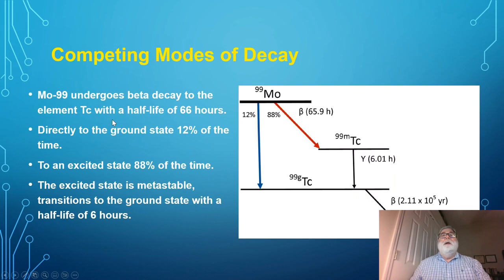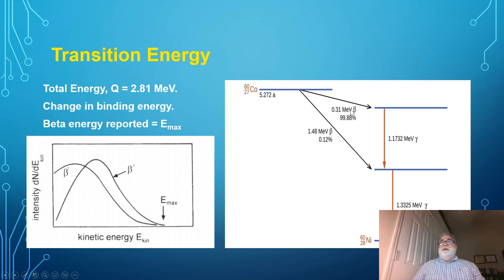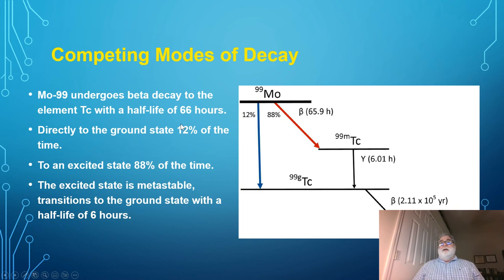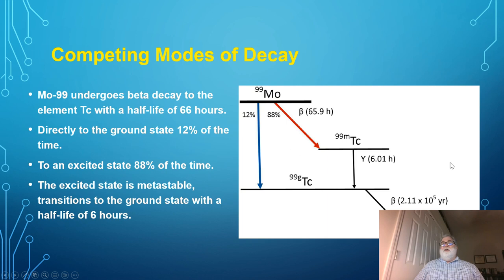There are competing decay modes — here we had two different possible betas that could be emitted. Here's another example: molybdenum-99 undergoing beta decay to technetium, with an intermediate energy level in technetium — technetium-99m, which is metastable. The nucleus can stay in this state for some short period of time. About 88% of the beta particles move to this intermediate step, and then the nucleus relaxes and gives off a photon. About 12% of the time, the molybdenum beta particle goes straight to the ground state. The half-life for the beta decay is about 66 hours, and the half-life for the metastable state is about 6 hours.